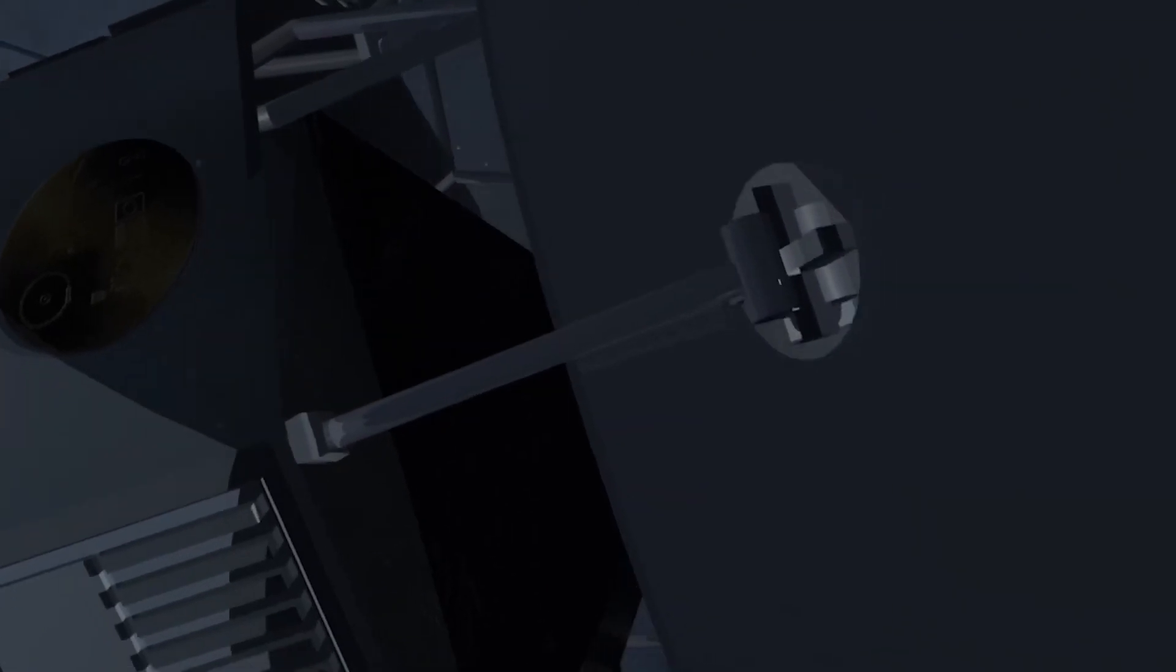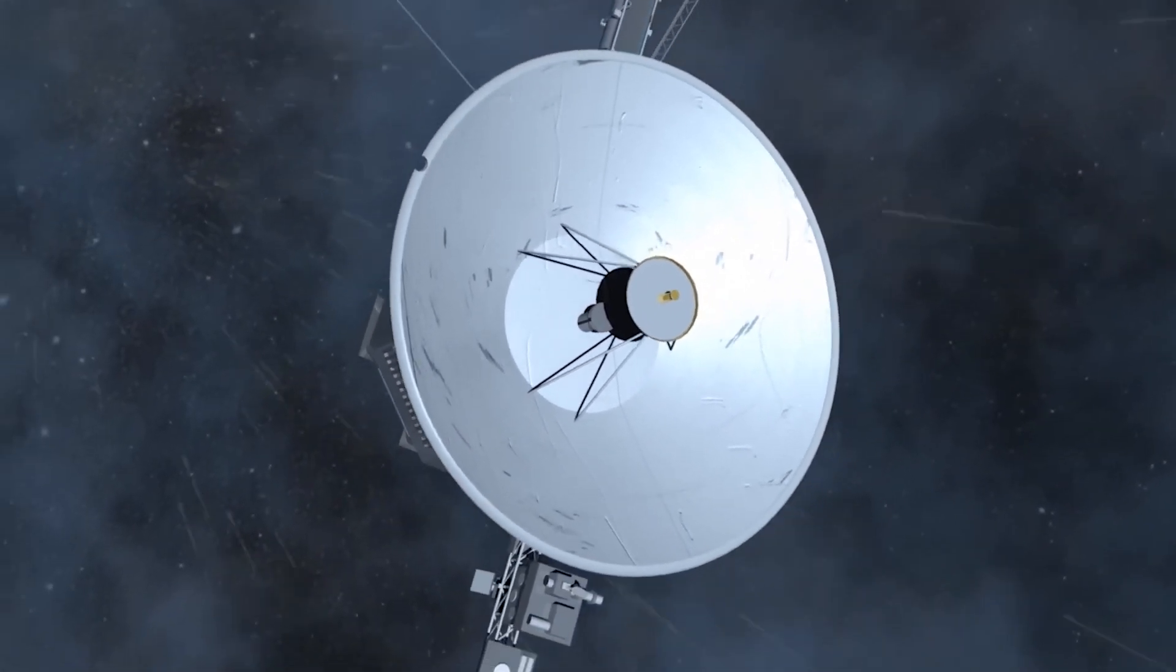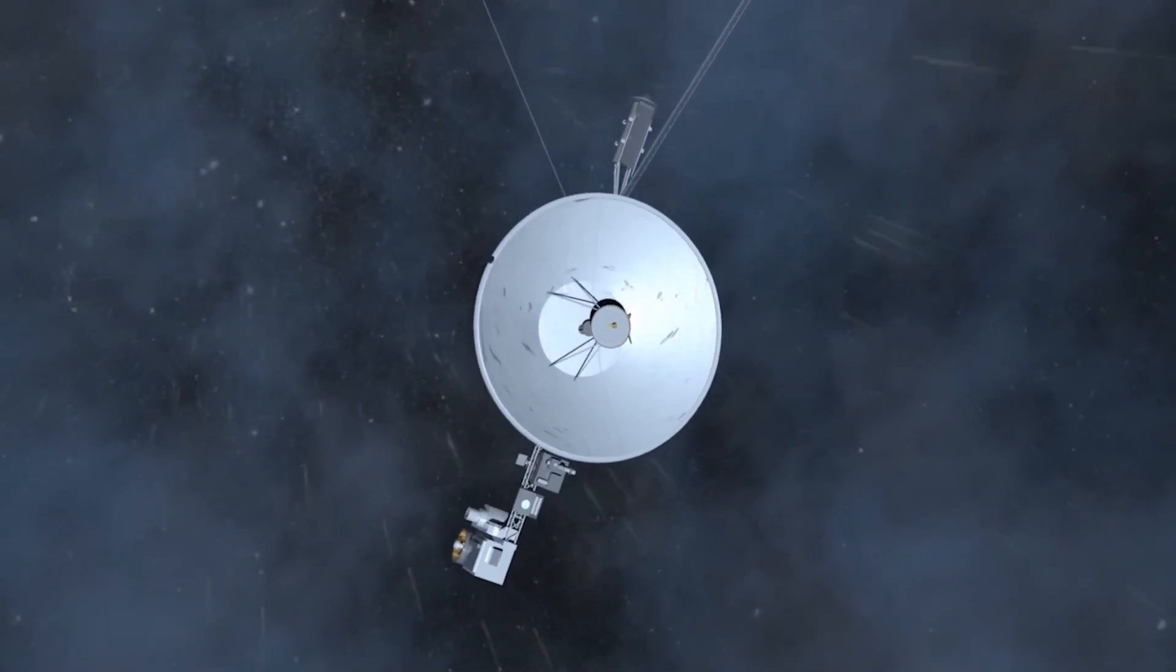Thus, the Voyager 1 probes, launched towards the edges of the solar system, have crossed this limit several times, in 2002, 2003, 2004. Below this shock, the sun is the master. Beyond, its battle dries up.